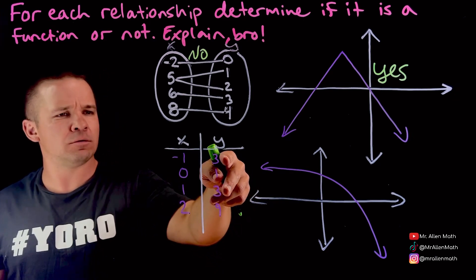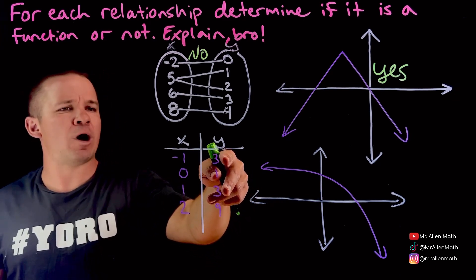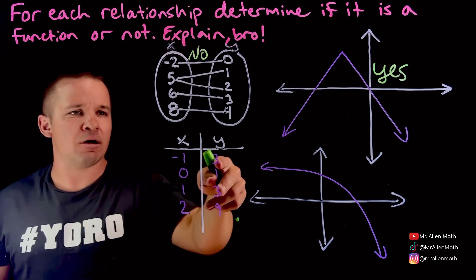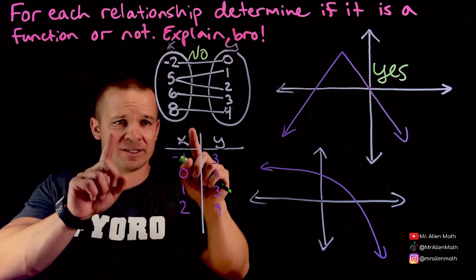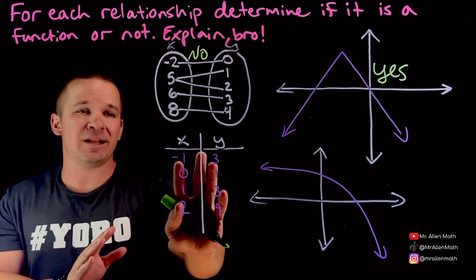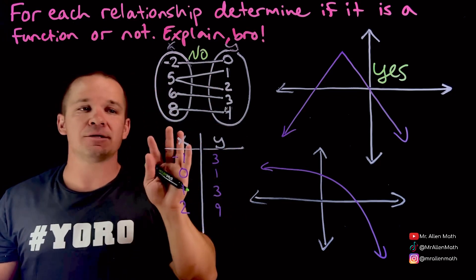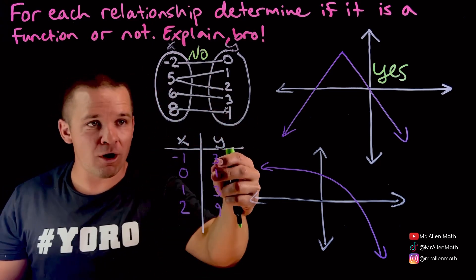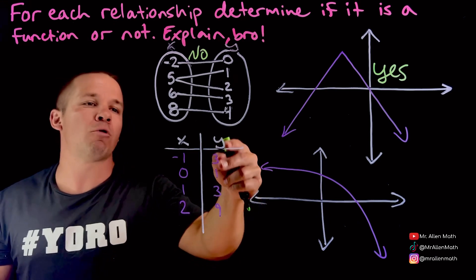Although you might be looking like, ooh, bro, I've got two of the same Y values here. That's okay. If I got different X values and the same Y value, this is actually going to end up being like a quadratic, like a U-shaped function here. And that is okay. I can have the same Y value appear more than once.